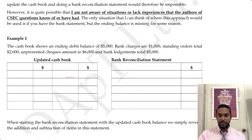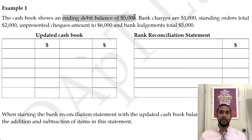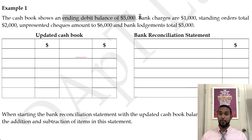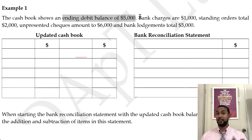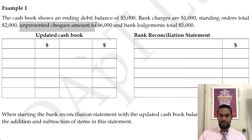So the cash book shows an ending debit balance of $5,000. Remember, a debit balance is regular for the cash book because the cash book is an asset and assets usually have debit balances. The cash book could have a credit balance in the bank column because of an overdraft. Bank charges are $1,000, standing orders total $2,000, un-presented checks amount to $6,000, and bank lodgements total $5,000.